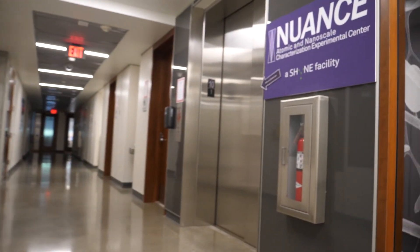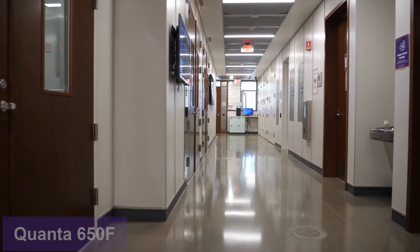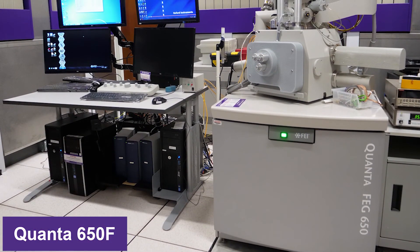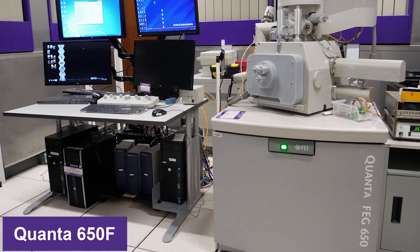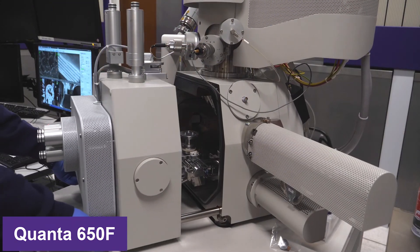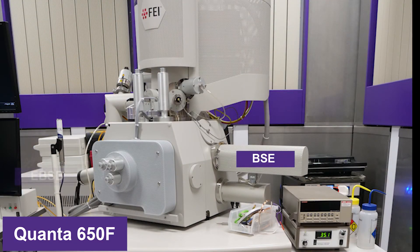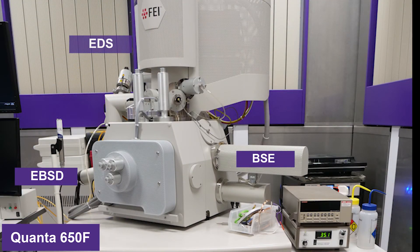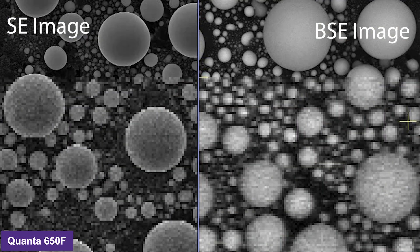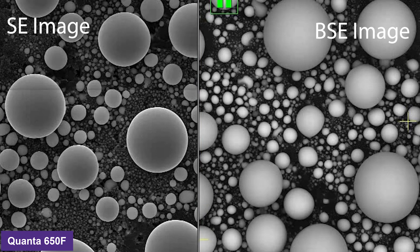Most of the other SEMs in the EPIC lab are located on the ground floor of the AB wing. The first microscope you'll see on the ground floor is the FEI QUANTA 650F SEM. The QUANTA can perform a number of advanced SEM techniques. It is equipped with a dedicated backscattered electron detector, an EBSD detector, and an EDS detector. The QUANTA allows you to scan an SE image and a backscattered electron image simultaneously.